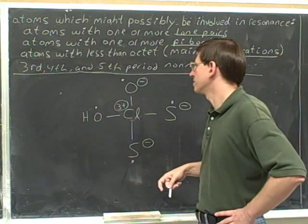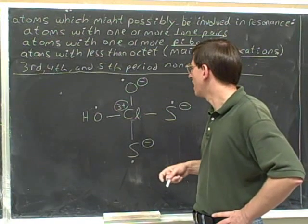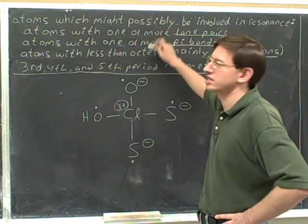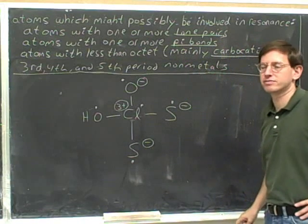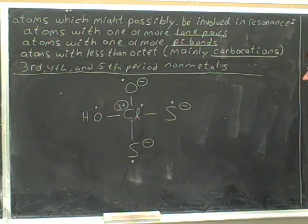Any non-metal from the third period or beyond can be a candidate for resonance, even if it doesn't satisfy the other three characteristics. So I can put a dot in there for that chlorine. So that is another characteristic for resonance.